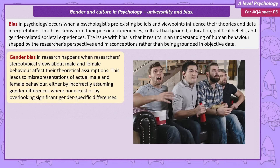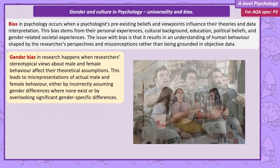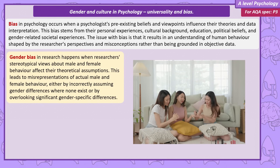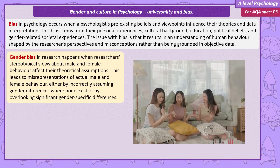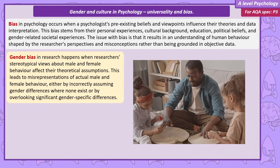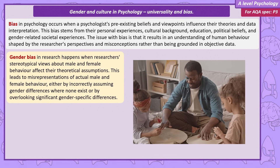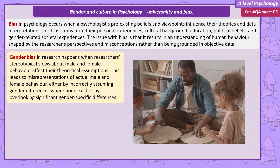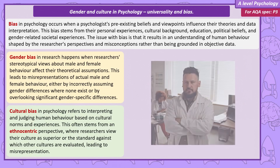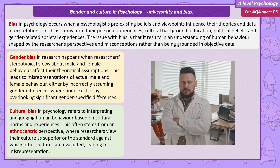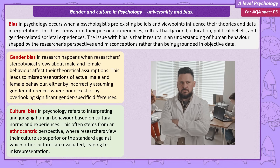Gender bias is when researchers' stereotypical beliefs about male and female behaviour influence their theoretical assumptions. This is a problem as it can misrepresent actual male and female behaviour, either by assuming behaviour is different depending on gender when it's actually similar, or that behaviour is identical when it's quite different. Cultural bias in the context of psychology means interpreting and judging human behaviour through the lens of your own cultural expectations and norms. This misrepresentation is often due to the researchers having an ethnocentric viewpoint — they automatically assume their own culture is superior to other cultures, or the norm that other cultures should be judged against.